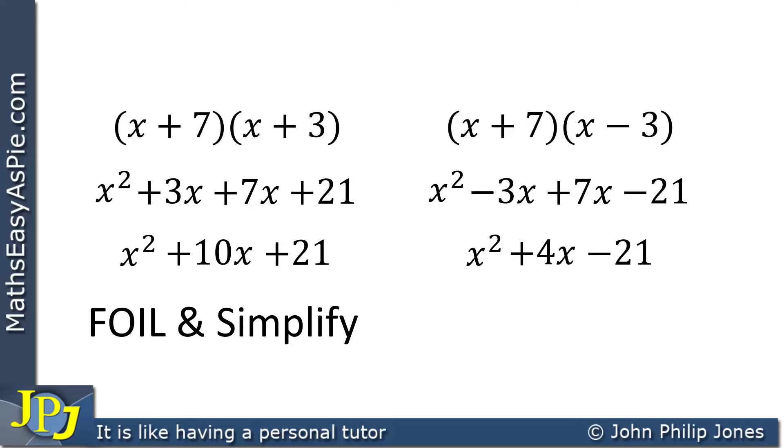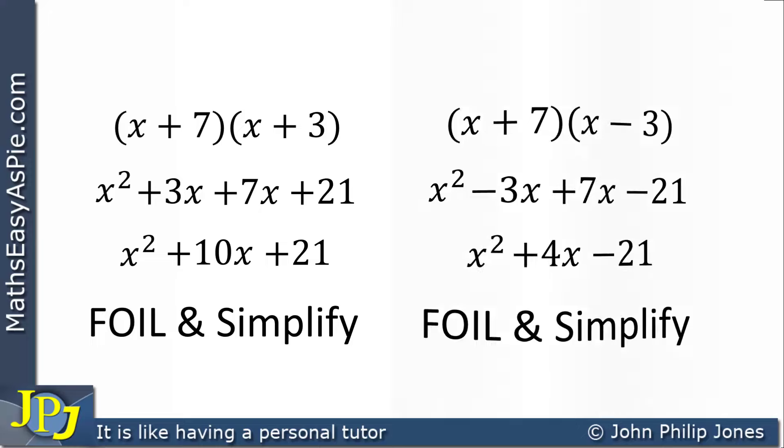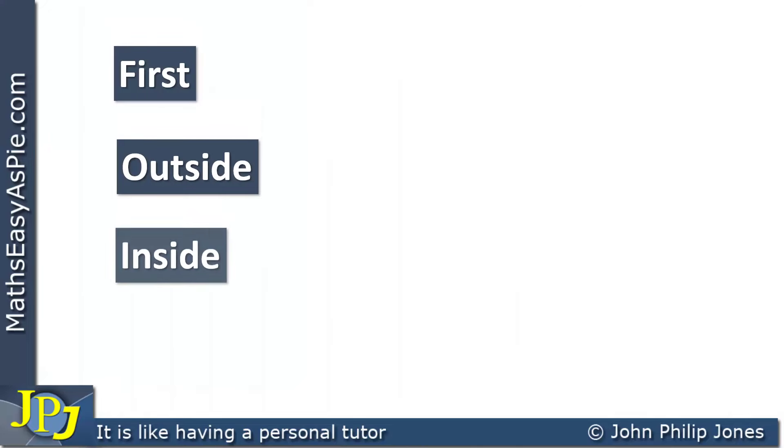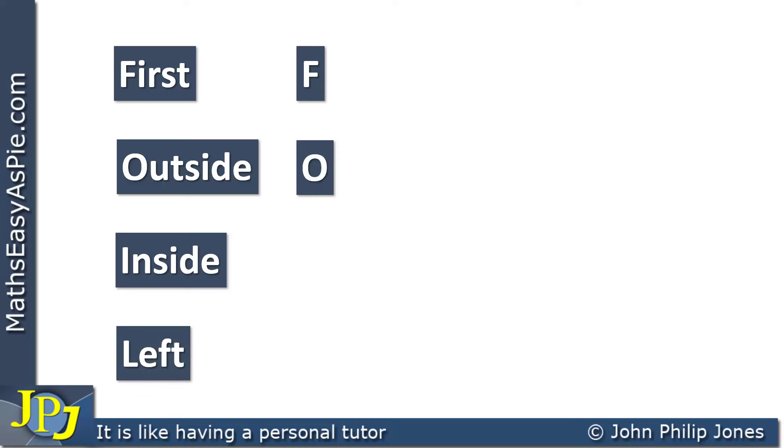You then bring down the x squared and the minus 21, and you can see what we've done here. We've used FOIL, and then we have simplified by collecting the like terms. So it is useful for you to remember that when we consider this, we use first, outside, inside, left, and we took the first letter from each of the words to spell FOIL.